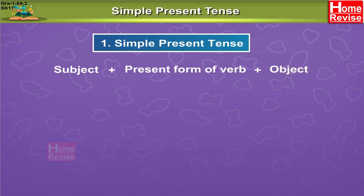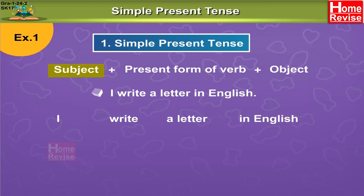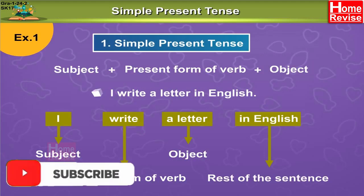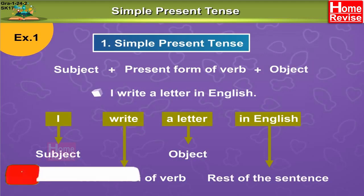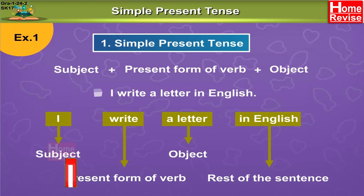Let's understand it with an example. Example 1: I write a letter in English. This is your sentence. Which is the subject here? I. Write is the present form of the verb. A letter is the object. In English can be the rest of the sentence. This sentence is in the simple present tense.